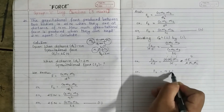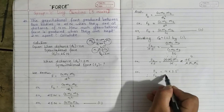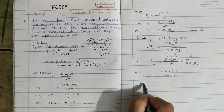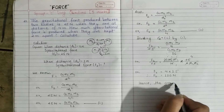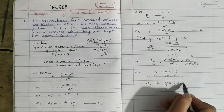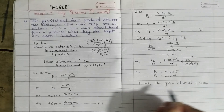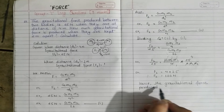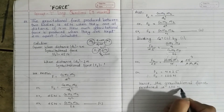Therefore F2 equals 4 multiplied by 25 by cross-multiplying, giving F2 equals 100 Newton. Hence the gravitational force produced is 100 Newton.